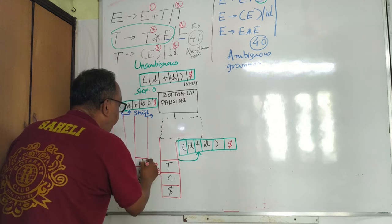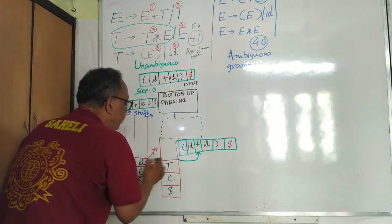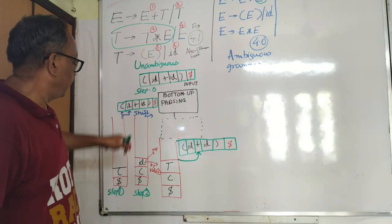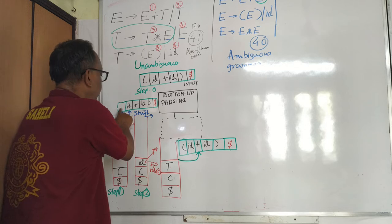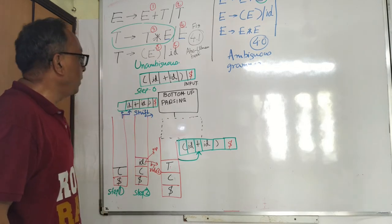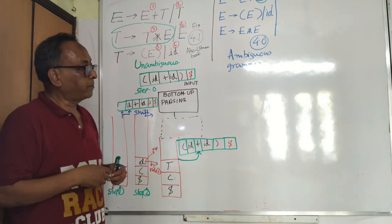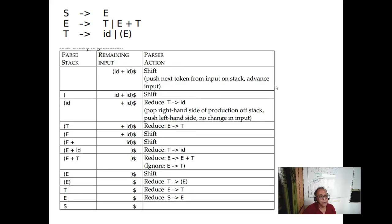By rule number six, you can reduce id to T: pop id and push T, but your input remains. The left bracket is consumed. We proceed this way. Let's come to the screen — this is the original grammar. The stack initially contains only dollar (the end-of-stack marker). The remaining input is the full input. The parser action is shift, so it puts the opening brace onto the stack. Then again shift — id comes in, shift — then you reduce this id to T by rule number six.